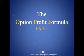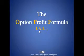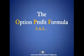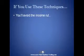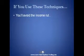Essentially, what the Option Profit Formula boils down to is: you take your income from your job, you buy or accumulate assets, and then you take those assets to generate income. Don't let the simplicity catch you off guard, because if you learn and use the techniques I'm about to show you, what you'll do is avoid the income rut. The income rut is the difference between where you are financially and where you want to be.